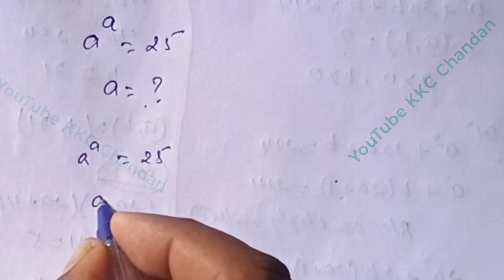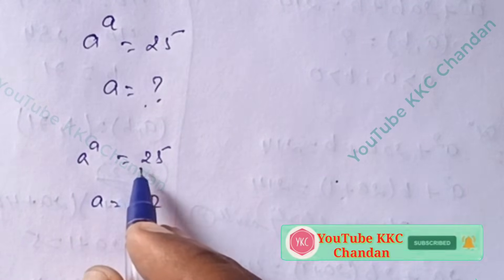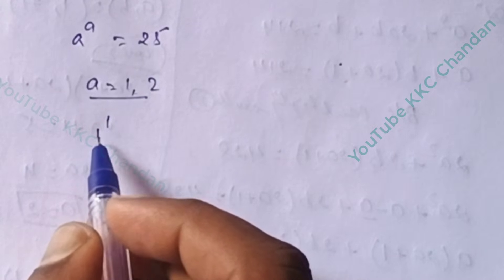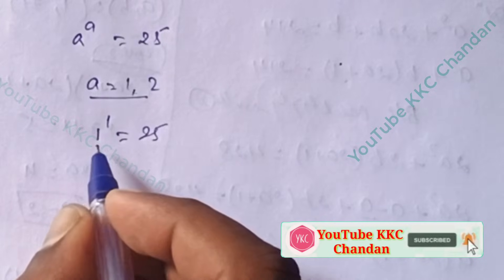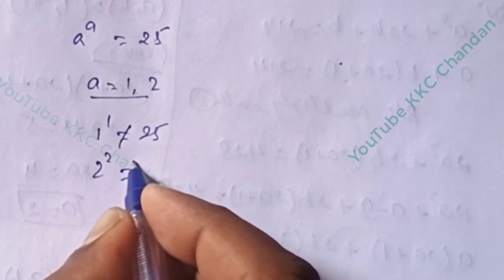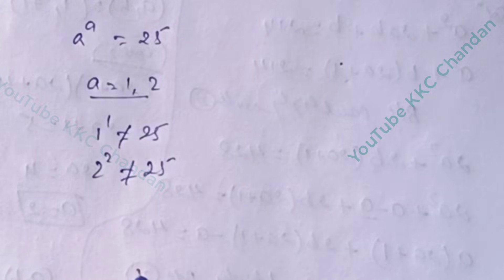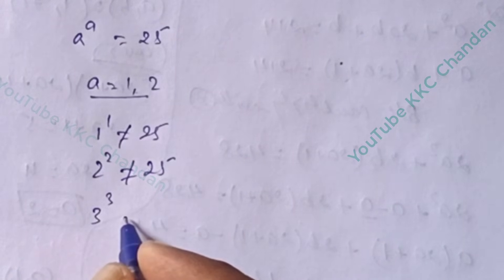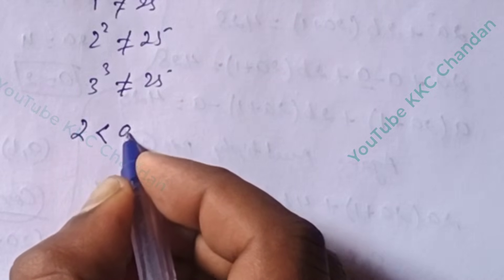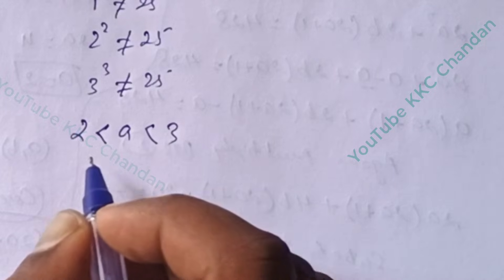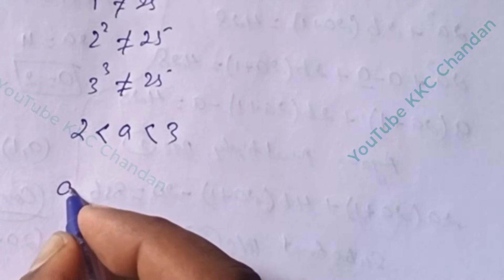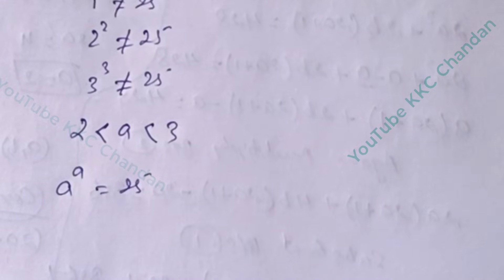If I put a = 1 or a = 2, the value does not equal 25. See here: 1^1 does not equal 25. If I put 2^2, that also does not equal 25. If I put 3^3, that also does not equal 25. So 2 is less than a, and a is less than 3. According to the question, a^a = 25.